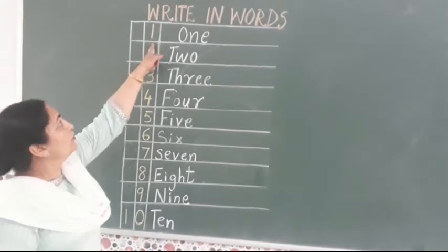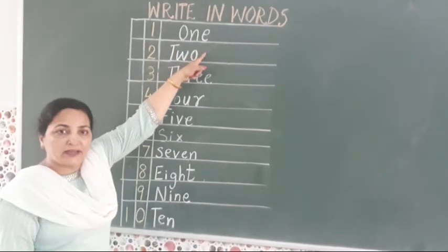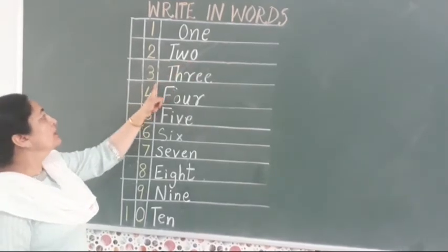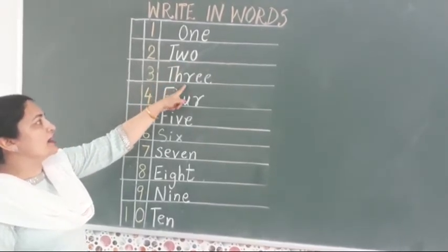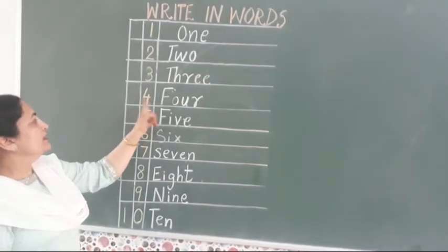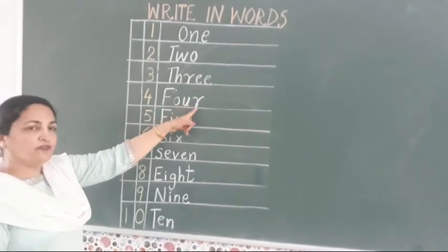Now once again. O-N-E, one. T-W-O, two. T-H-R-E-E, three. F-O-U-R, four.